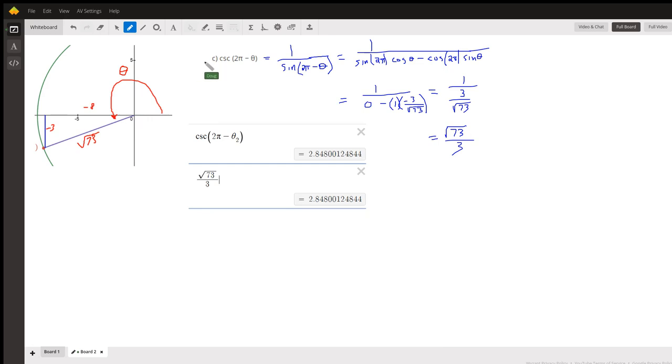And finally, for part c, one way to do it is to say the cosecant of this angle, whatever it is, is equal to the reciprocal of the sine function. So cosecant is 1 over the sine of that same angle. And now we can use that identity that we used on the previous board for the sine of the difference of two angles.